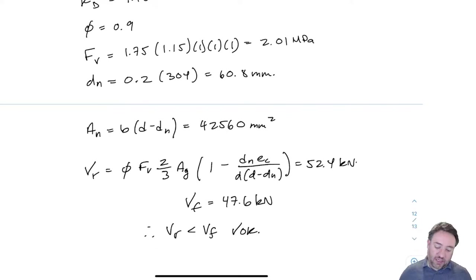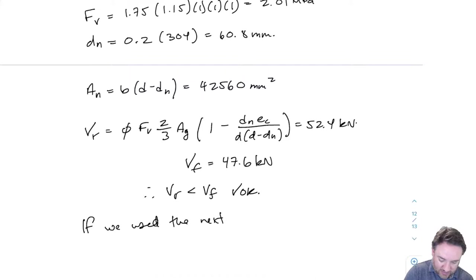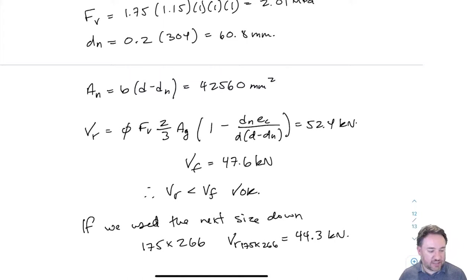And you recall that my VF was 47.6. That's the worst case VF for all of the case four shear values. So therefore VR is greater than VF and we are okay. But it's a close call. I mean, we're only off by three, four kilonewtons. So it's close, but it's fine. That probably does mean that if we had gone one beam size down, it wouldn't have worked. In fact, if we did use the next beam size down, which is a 175 by 266, the VR for that would have equaled 44.3, which would not have satisfied my VF. So this is the minimum size based on the shear strength, considering that we have these notches.